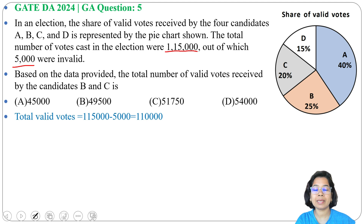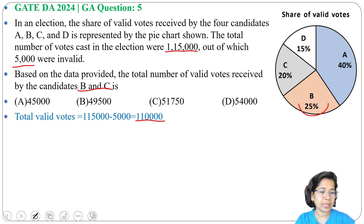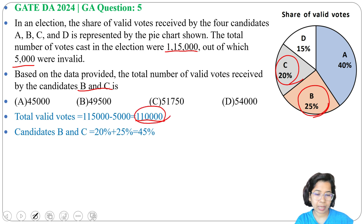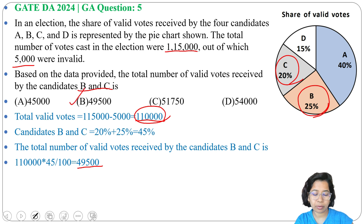First, we subtract the 5,000 invalid votes. So total valid votes = 1,10,000. B has 25% and C has 20%, so together that is 45%. Now 45% of 1,10,000 = 1,10,000 × 45 ÷ 100 = 49,500, which is present in option B.